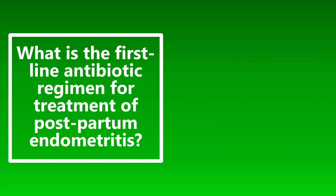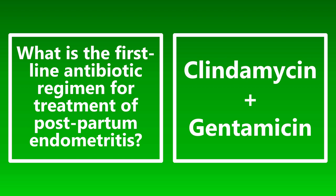What is the first-line antibiotic regimen for treatment of patients with postpartum endometritis? It's going to be clindamycin and gentamicin, generally both administered IV. If a patient is sick enough to have postpartum endometritis, they're probably being admitted, so IV is the way to go. Make sure you have those antibiotics down: IV clindamycin and IV gentamicin.